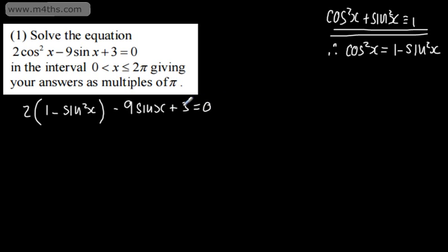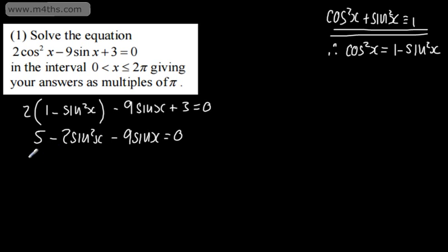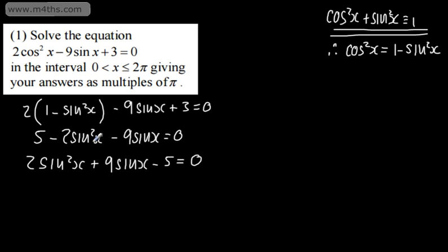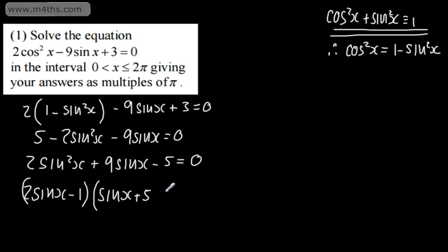This is a quadratic equation in sin, and I can rearrange it in the form ax² + bx + c = 0. So we get 2 + 3 = 5, giving 5 - 2sin²x - 9sinx = 0. Rearranging: 2sin²x + 9sinx - 5 = 0. I'm going to factor this as (2sinx - 1)(sinx + 5) = 0.